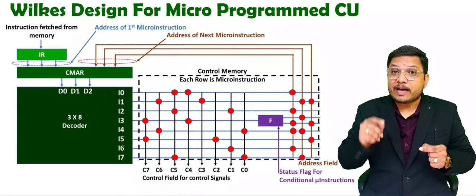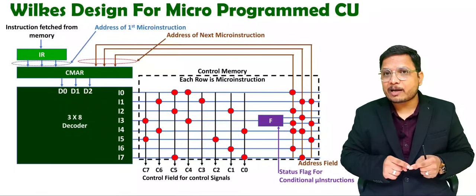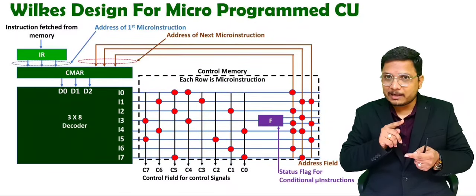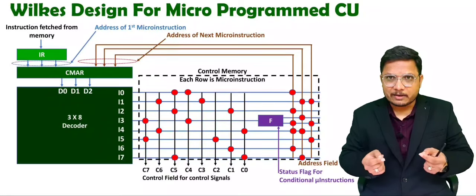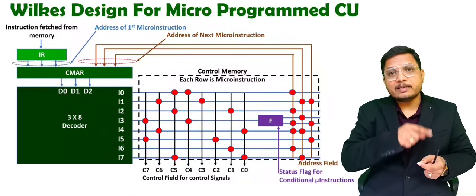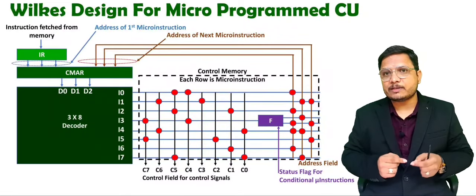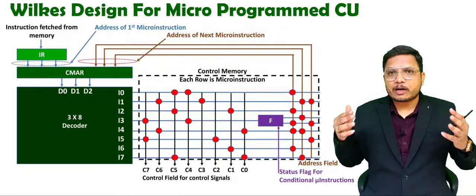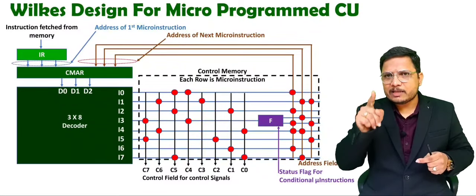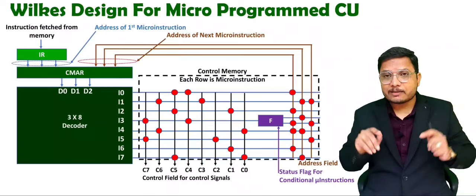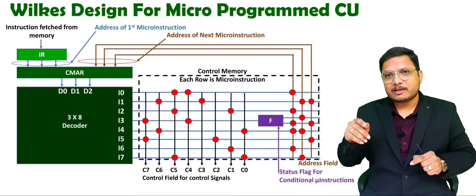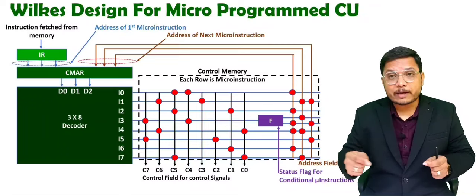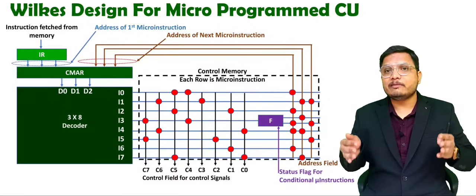That is referred to as fetch instruction. Once I take it inside the CPU, I will be decoding the instruction — identifying what operation should be performed by that instruction. After that, I will be performing execute. When you want to execute one instruction inside the CPU, there are many micro-operations done by the CPU. Those micro-operations are performed with respect to control signals. CPU will have to release control signals for each micro-operation.